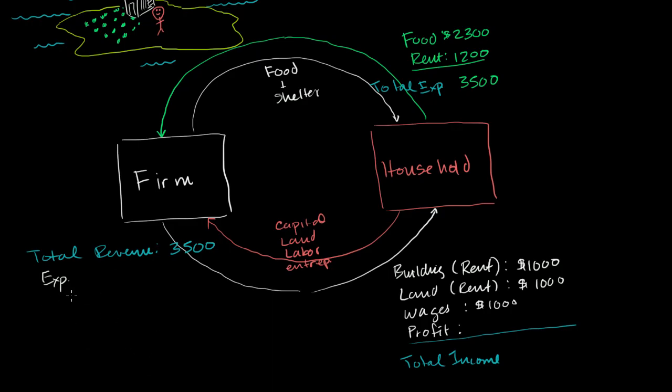So expenses, for the building the firm has to pay $1,000. For the land, the firm has to pay $1,000. And for the labor, the firm also has to pay $1,000. And so what's left over is the profit. We're assuming that there's no taxes over here. This is the profit for the owners. $3,500 minus 3,000 gives us a profit of $500.